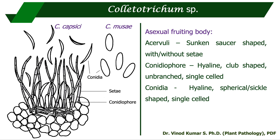In Colletotrichum, the conidiophores are hyaline, club-shaped, unbranched, and single-celled. Conidia may be spherical or sickle-shaped depending on the species, and always single-celled. For example, Colletotrichum capsici causes dieback of chili and Colletotrichum falcatum causes red rot of sugarcane — both produce sickle-shaped, hyaline, single-celled conidia. Colletotrichum musae (anthracnose of banana), Colletotrichum gloeosporioides (anthracnose of mango), and Colletotrichum lindemuthianum (anthracnose of bean) produce elliptical, hyaline, single-celled conidia.